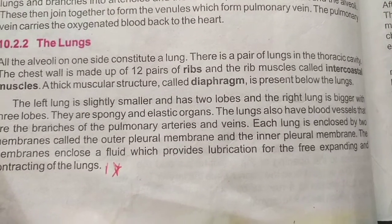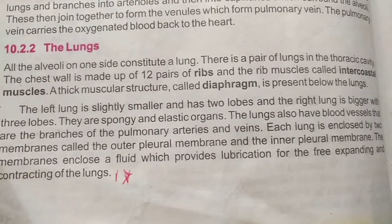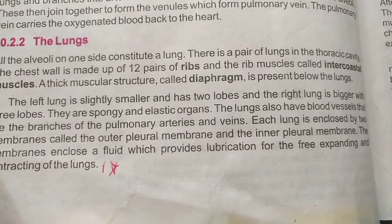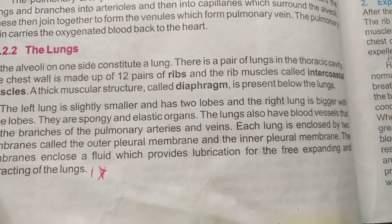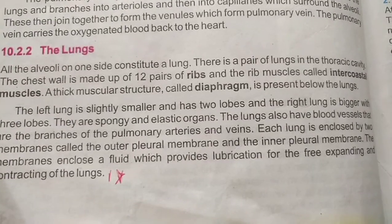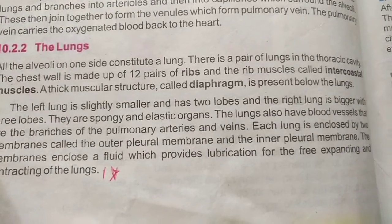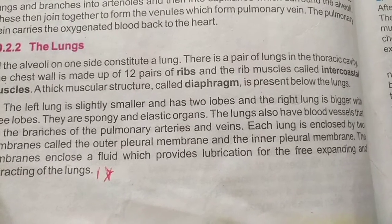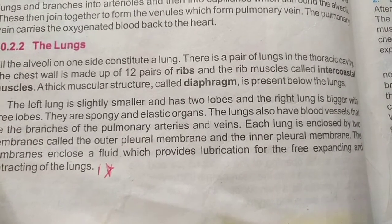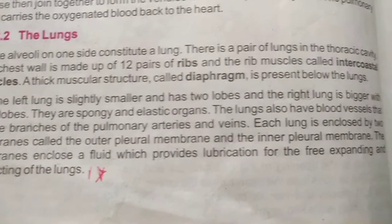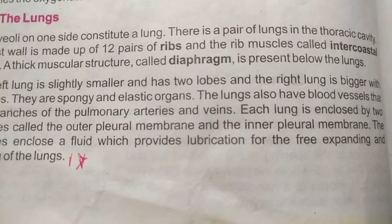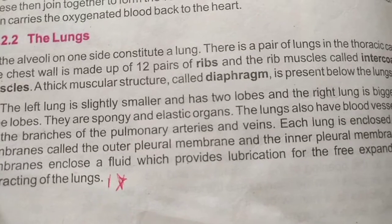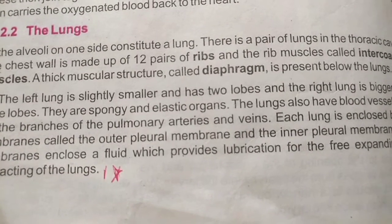The diaphragm separates the lung structure from the abdominal cavity. The left lung is slightly smaller and has two lobes, and the right lung is bigger and has three lobes. They are spongy and elastic organs — spongy like a sponge and elastic, having flexibility. The lungs also have blood vessels that are branches of the pulmonary arteries and veins.